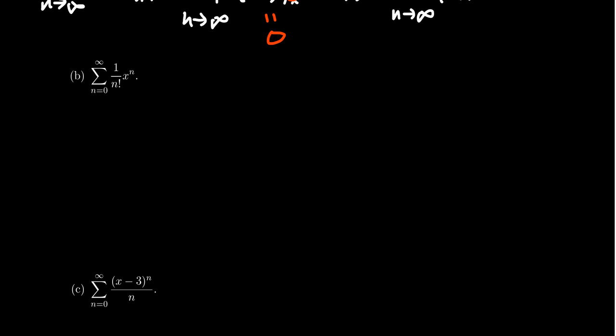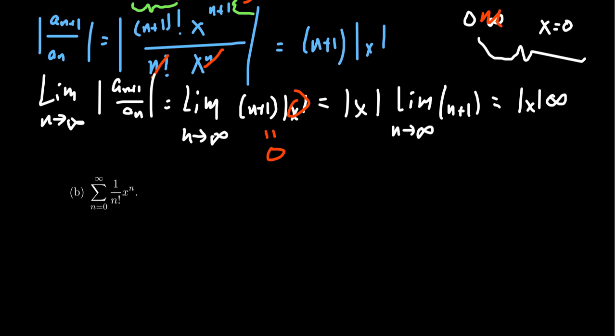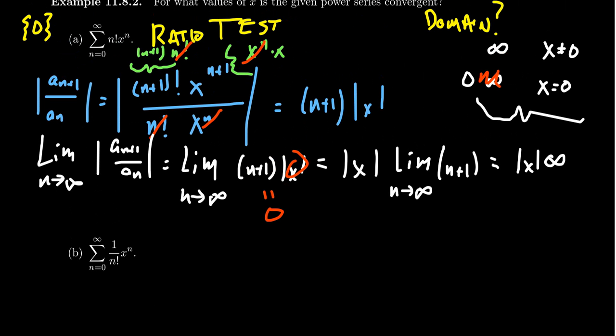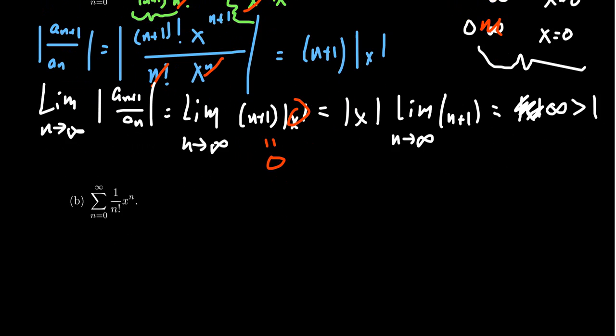Before we leave this example: why is it significant that the limit goes to 0? When using the ratio test, if the limit is greater than 1 you are divergent; when it's less than 1, it's convergent. Normally this limit is infinity, which is definitely bigger than 1. The only way to get less than 1 is when the limit goes to 0, and that happens only when X equals 0.